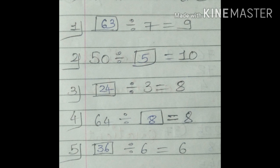Number 4: 64 divided by dash equals 8. If we divide 64 by 8, the answer is 8. So the answer in the box is 8. Number 5: dash divided by 6 is equal to 6. We multiply 6 by 6. 6 sixes are 36. So the answer in the box is 36. Number 6: 49 divided by dash is equal to 7. We divide 49 by 7, and to know this we need to recite the 7 times table. 49 divided by 7 is 7. The answer in the box is 7.